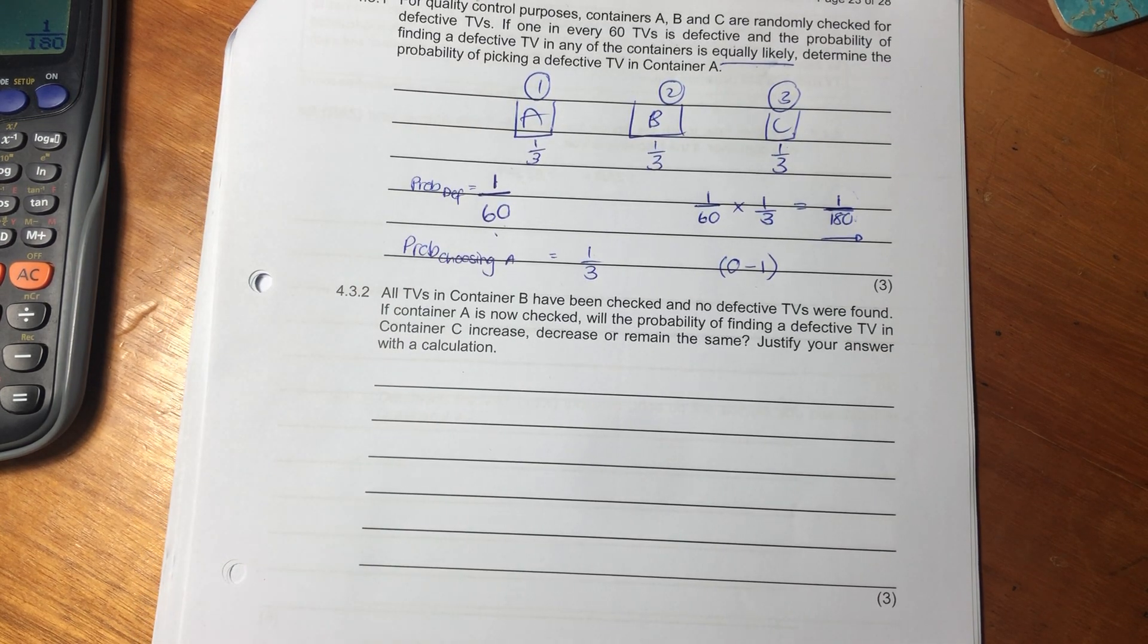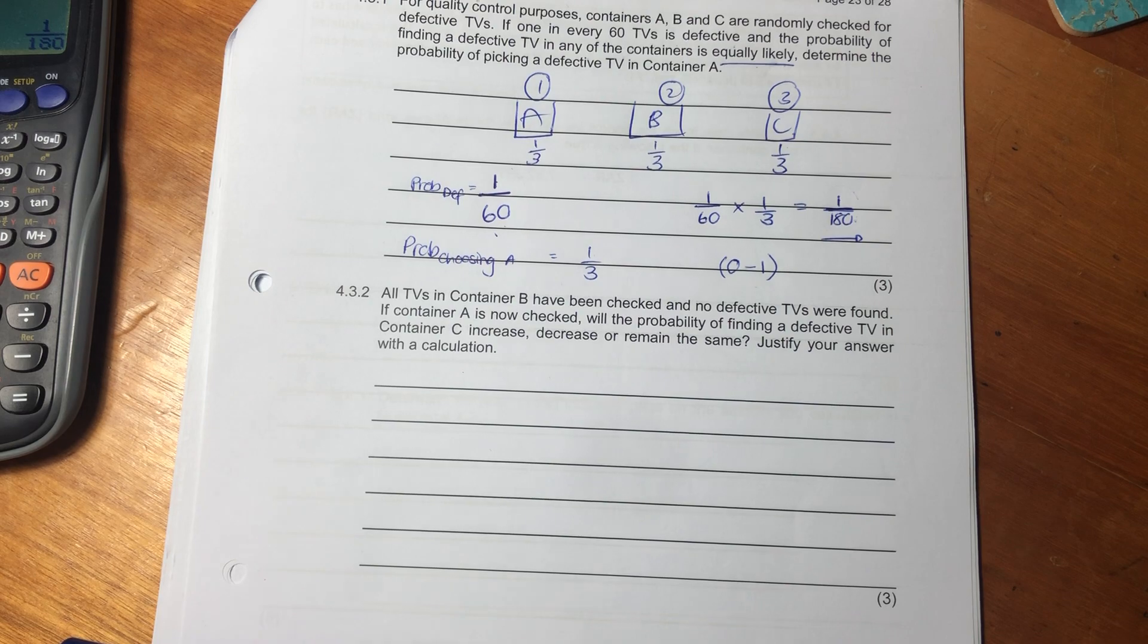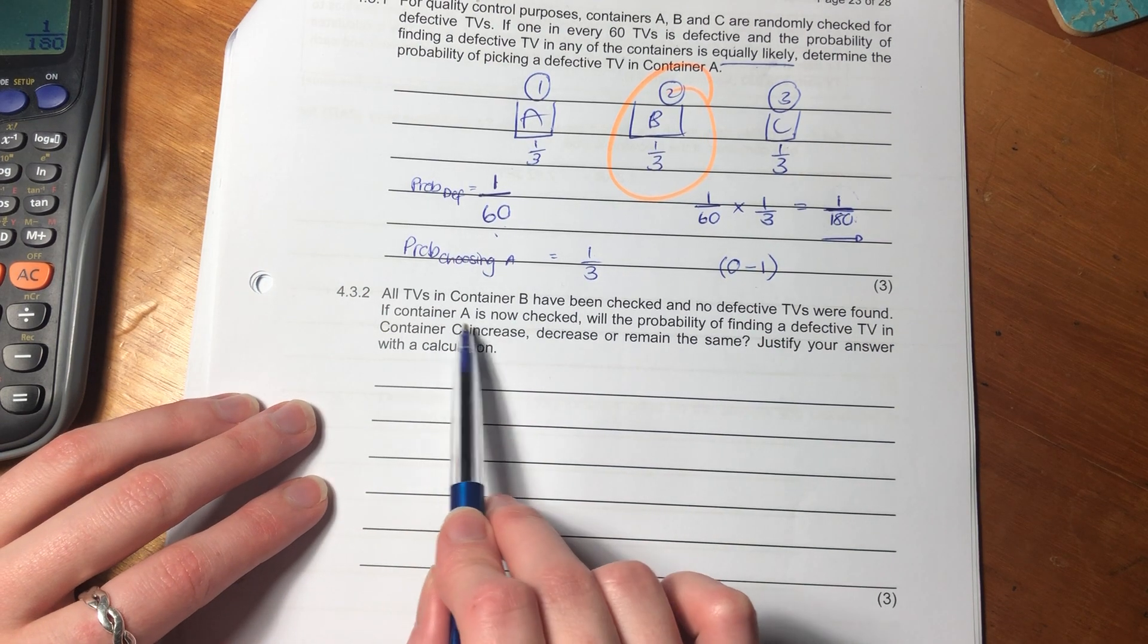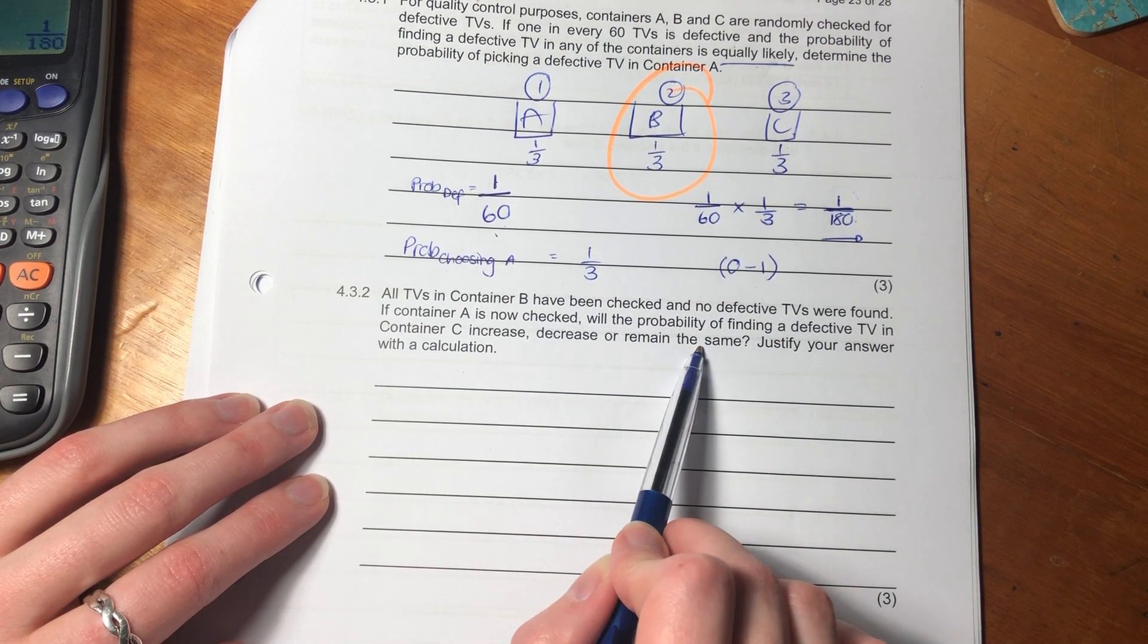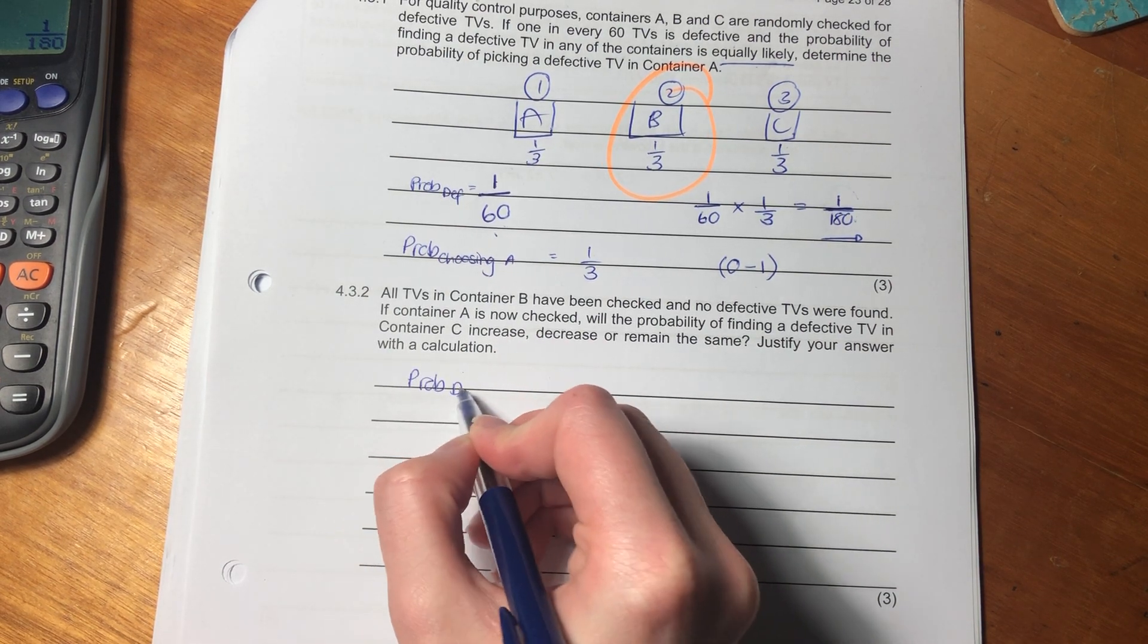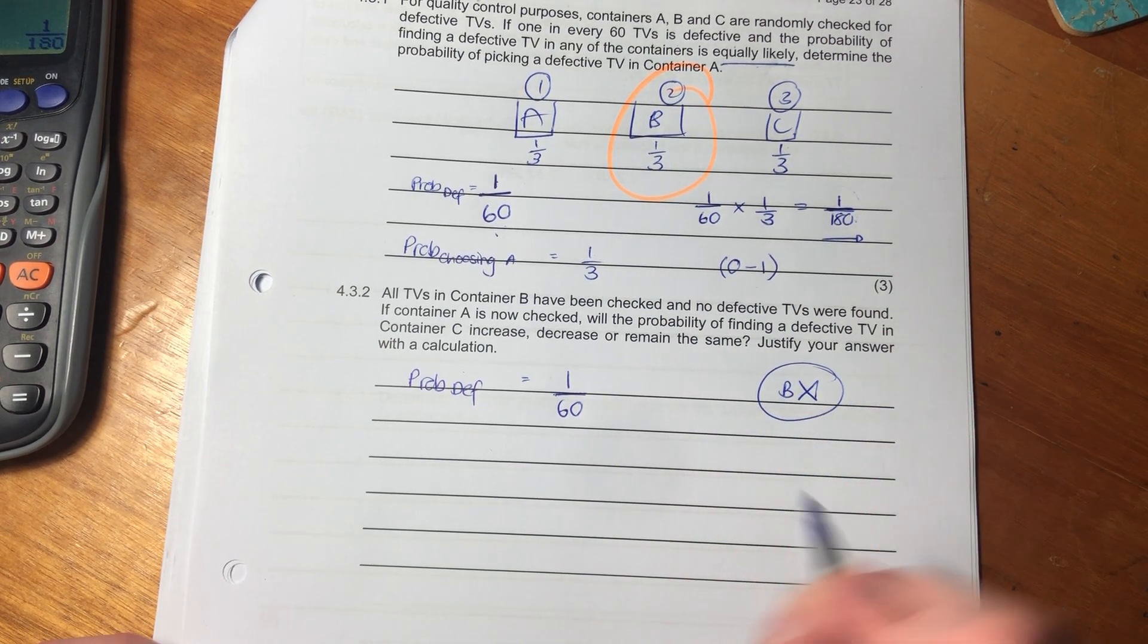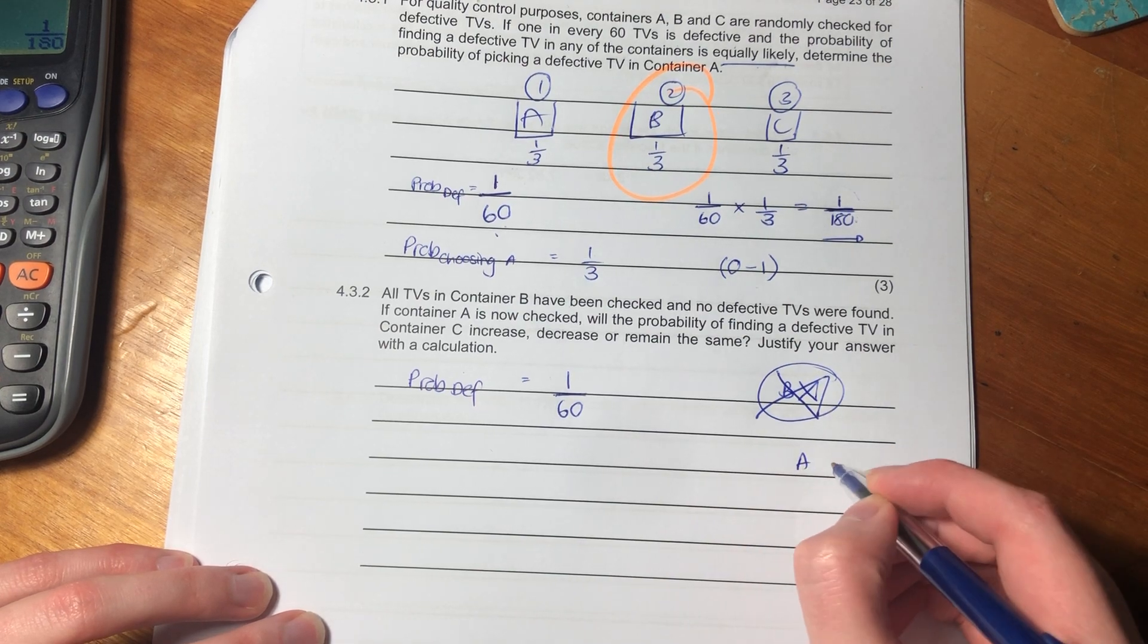And we can see here, because this is a fraction, one over 180, it's smaller than one. So we know that our probability at least makes sense in the context of probability as a whole. And because we went through the scenario and we broke it down, it's now a little bit easier to access. Now, let's go into the next probability question, because maybe this one is a little bit more challenging. It says, all TVs in container B, so in our container B here, I'm just going to put a circle around container B, have been checked and no defective TVs have been found. So B is the container to be, nothing's defective there.